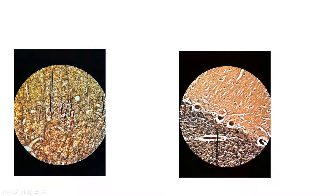They're found in the cerebral cortex. And then over here, this is the cerebellum. Right on this border between the gray and white matter, you're going to have these little cells that kind of look like they have a little tail. These are called Purkinje cells. So Purkinje cells in the cerebellum, pyramidal cells in the cerebral cortex.